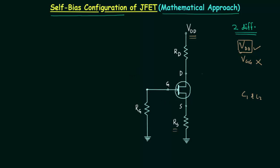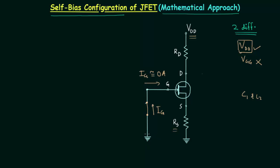We can further simplify this circuit. The current through resistance RG is the gate current IG, and in field effect transistors IG is nearly equal to 0A. So the voltage drop across RG, call it VRG, is equal to 0V, and we can short-circuit RG. I will replace RG with a short circuit, joining the two nodes since both are at 0V potential. We will apply Kirchhoff's voltage law, and connecting these two points makes it more clear.